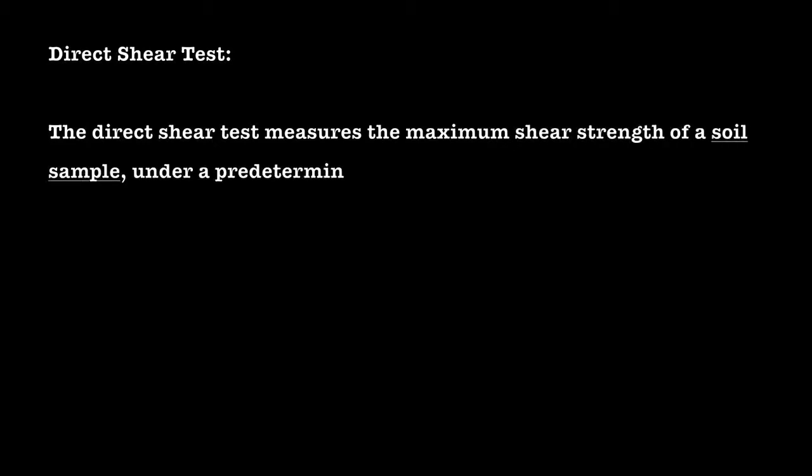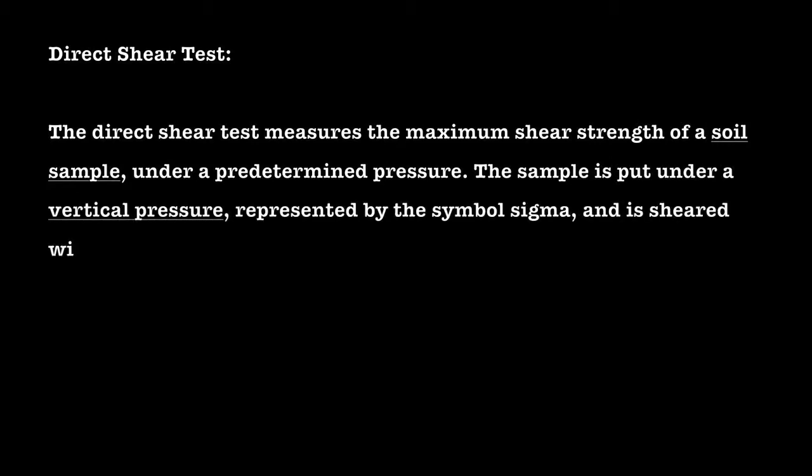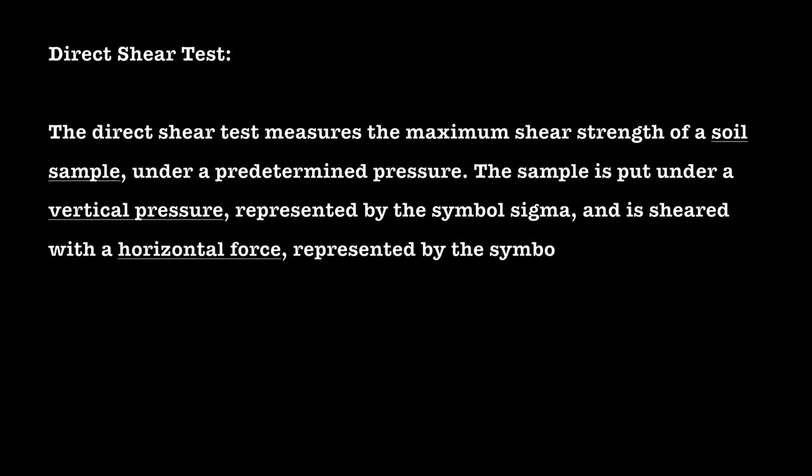One classic method of determining these properties is through the direct shear test. The direct shear test measures the maximum shear strength of a soil sample under a predetermined pressure. The sample is put under a vertical pressure, represented by the symbol sigma, and is sheared with the horizontal force represented by the symbol tau.